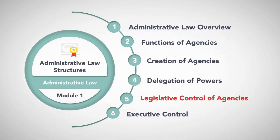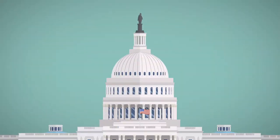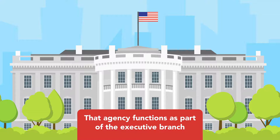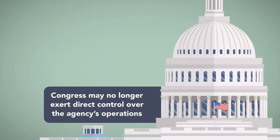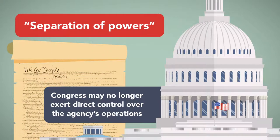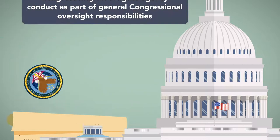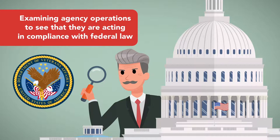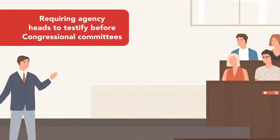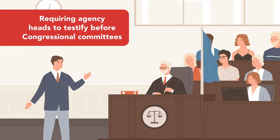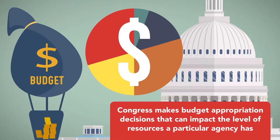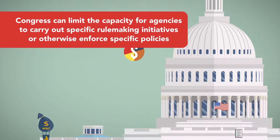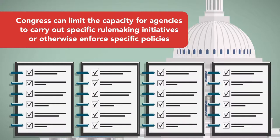Legislative control of agencies. Once Congress creates a new agency, that agency functions as part of the executive branch. Congress may no longer exert direct control over the agency's operations, as this would violate the doctrine of separation of powers between the executive and the legislative branches. Congress may, however, investigate agency conduct as part of general congressional oversight responsibilities. This may include examining agency operations to see that they are acting in compliance with federal law, as well as requiring agency heads to testify before congressional committees. Likewise, Congress makes budget appropriation decisions that can impact the level of resources a particular agency has at its disposal to enforce agency rules and practices. In this way, Congress can limit the capacity for agencies to carry out specific rulemaking initiatives, or otherwise enforce specific policies which are at odds with congressional policy preferences.